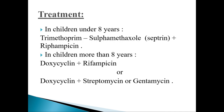Treatment is divided according to the age of the child — under eight years or more than eight years. In children under eight years, we use trimethoprim-sulfamethoxazole (co-trimoxazole) plus rifampicin. In children more than eight years, we use doxycycline plus rifampicin, or doxycycline plus streptomycin or gentamicin.